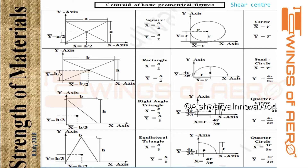Here I have shown a few important geometries frequently asked in exams: square, circle, rectangle, semicircle, triangle, quarter circle, equilateral triangle. These formulas are very important — you must memorize them. When taking the second moment of inertia about the y-axis, use x-bar; when taking a moment about the x-axis, use y-bar. Keep this in mind and remember the formulas accordingly.